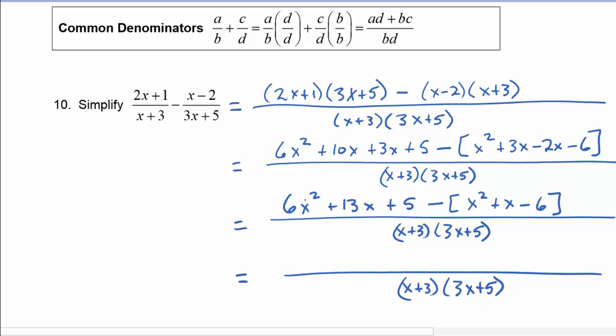So now we have 6x squared. Remember that this minus sign will distribute to each of these pieces. So we have 6x squared, and then minus x squared, so that's 5x squared. Then we have 13x and we're going to have minus x, so that becomes 12x. And then we have 5, and we have to distribute the negative again here, so this will actually become a positive 6, because minus of negative 6 becomes a positive 6. So that becomes 5 plus 6, which is going to equal 11.